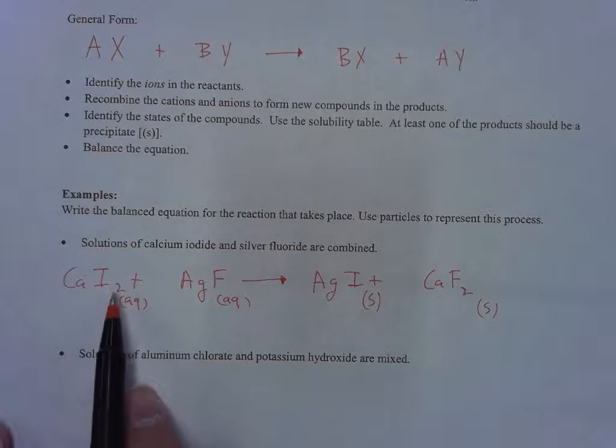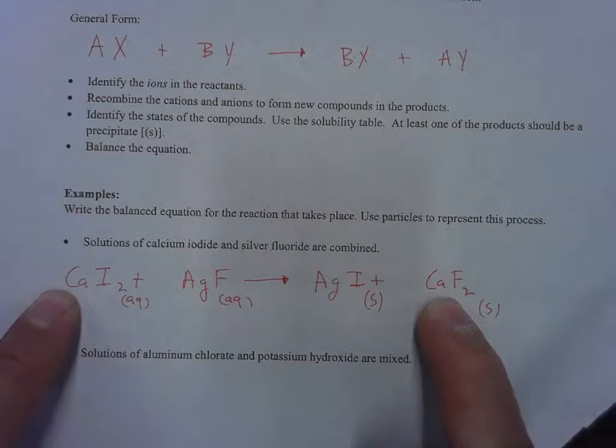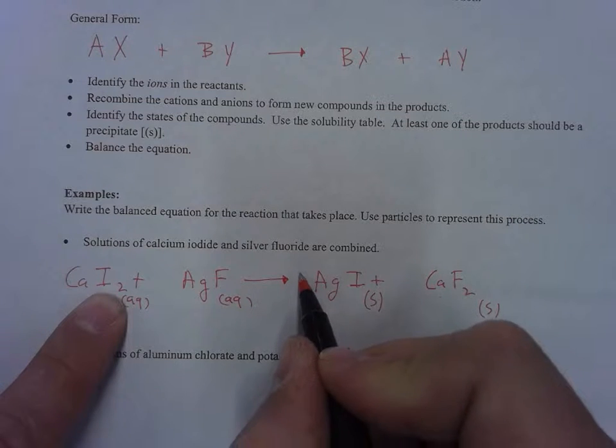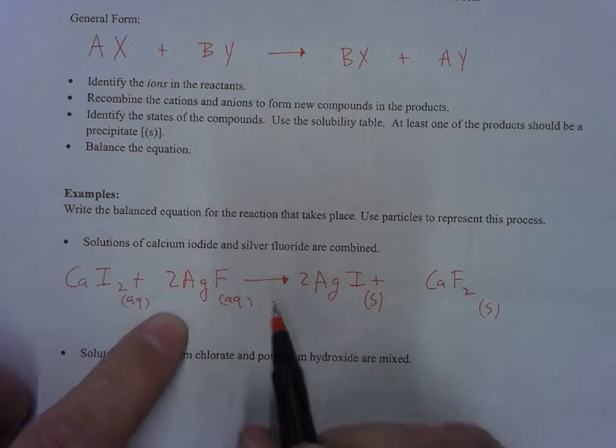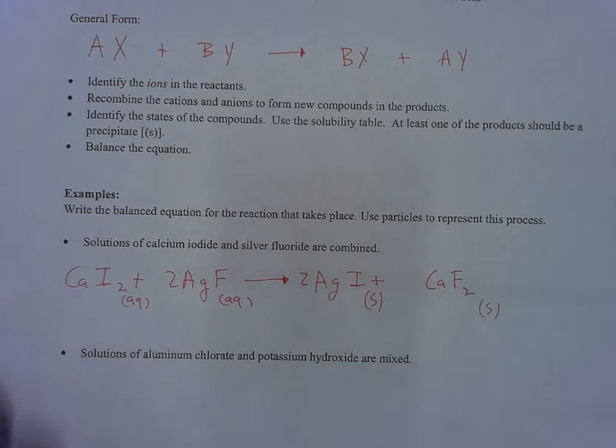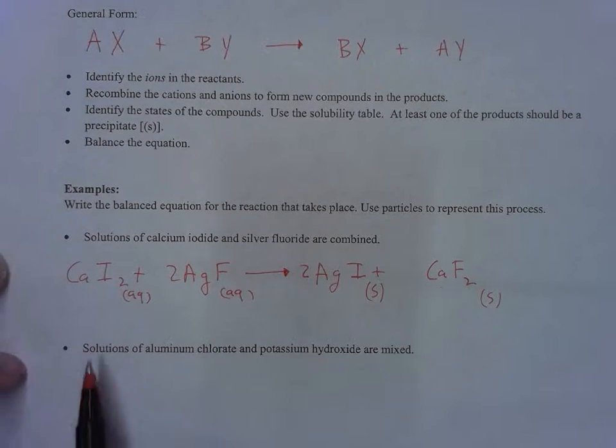The next step is to balance the equation. I've got one calcium and one calcium, two iodides and one iodide so I put a 2 there. That gives me two silvers, I put a 2 there, and that also balances out the fluorides with two fluorides. That is done. Go ahead and copy that.